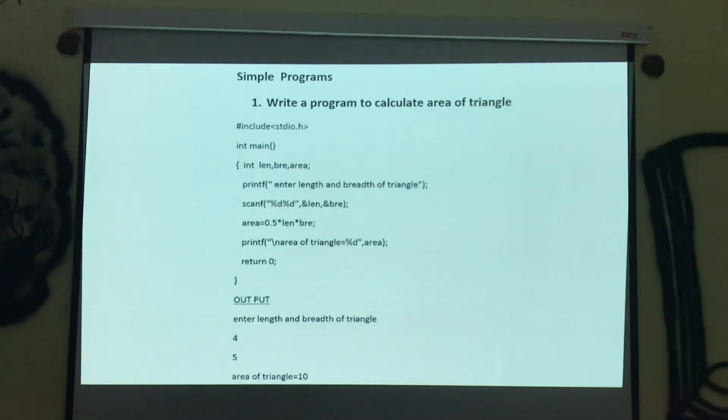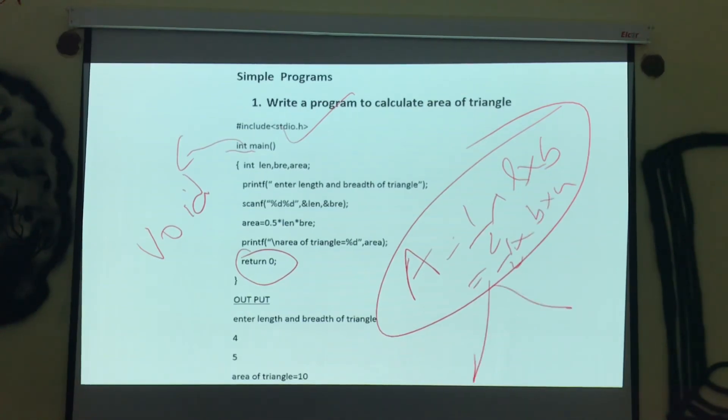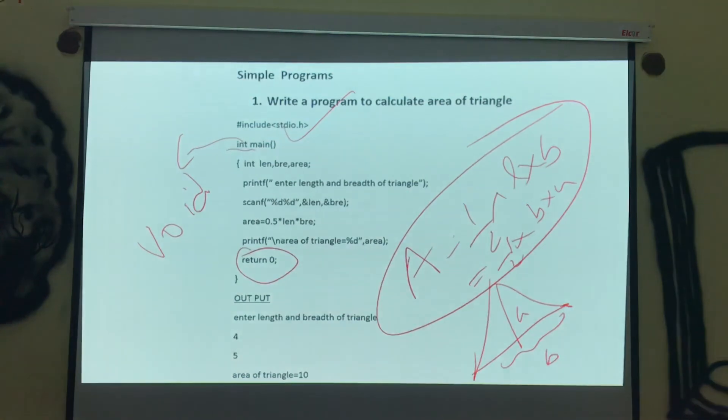Simple program. Write a program to calculate the area of a triangle. Hash include stdio.h, don't forget this thing. This is there in each and every program. If you don't want to write return 0 here, it should write void main. Then you can exclude this line. And how to calculate the area of a triangle? Area of a triangle is half into length into breadth. This is the logic which should be there in your memory. Or half into base into height, whichever. So the picture of a triangle should be there for you. If you know this thing, we can calculate the area of a triangle. If you know this thing, we can write any program.